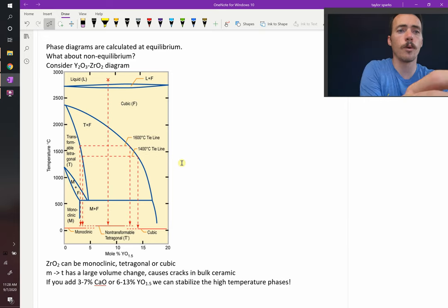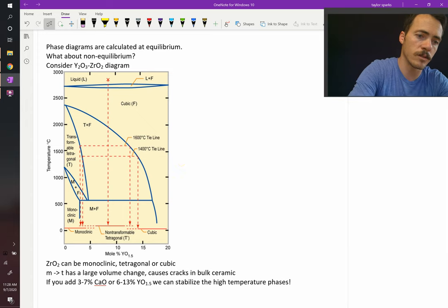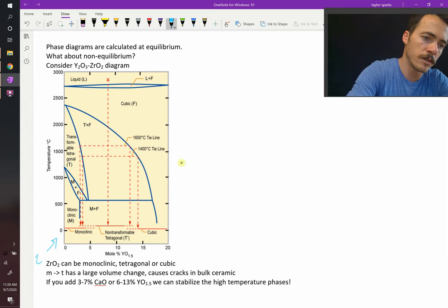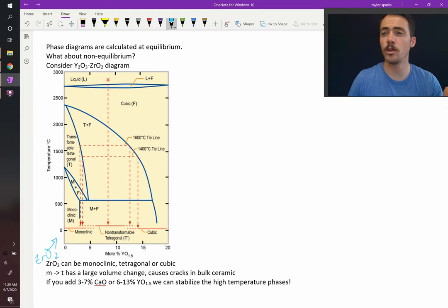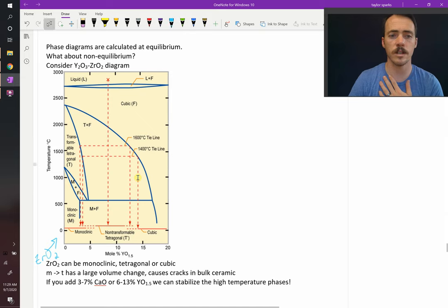This is the phase diagram for yttria-doped zirconia. On the left-hand side, you've got zirconia. Over here, you've got ZrO2. If you've ever heard about people talking about cubic zirconia rings, this is the same zirconia they're talking about. And as you introduce more and more yttria, the phase diagram looks like follows.